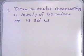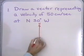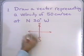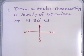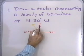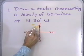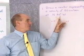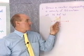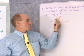For my first problem, I want to draw a vector representing a velocity of 50 centimeters per second at north 30 degrees west. I'll draw in my north, south, west, east coordinate system. From north, I'll go down 30 degrees towards the west — that will be this vector right here. That angle is 30 degrees, and the length of this vector is 50 centimeters per second. So the magnitude of the vector is 50 and its direction is north 30 degrees west.